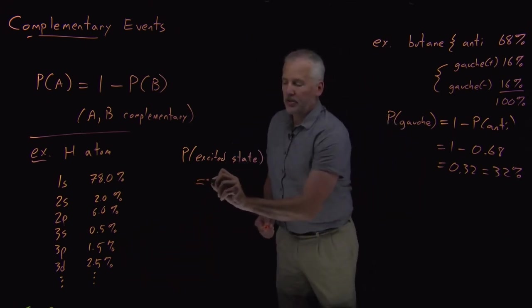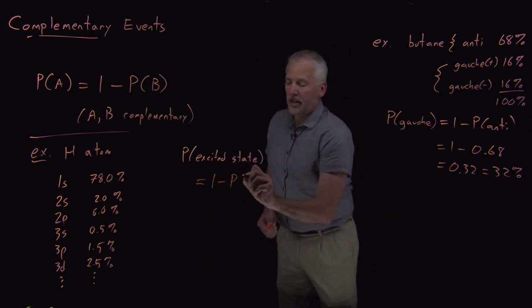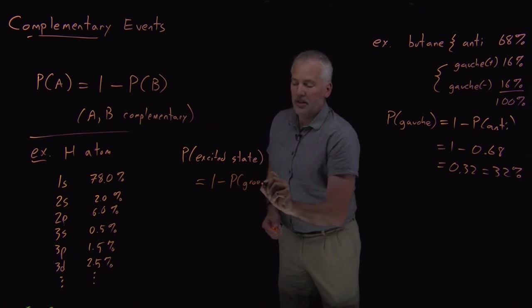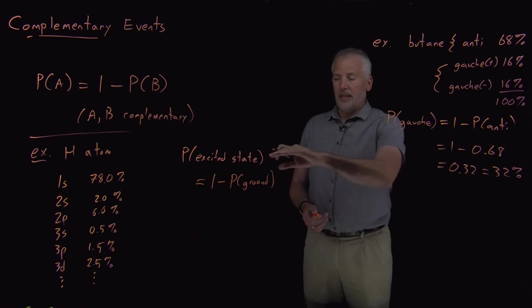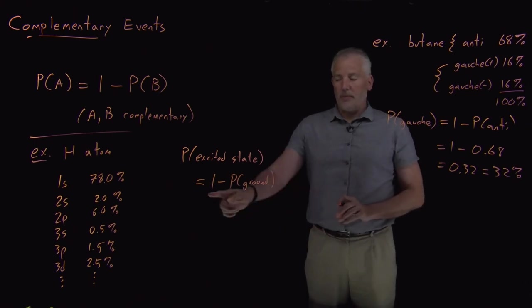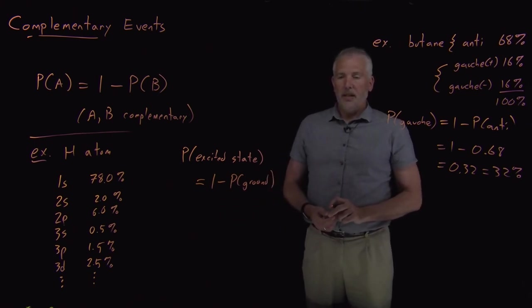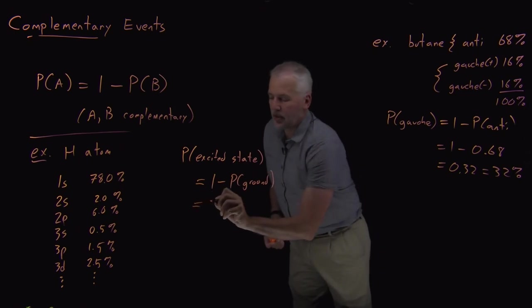But, of course, the easier way to answer that question is to say, well, that's either it's in a ground state, the 1 single ground state, or it's in one of the excited states. So the probability that it's in any one of the excited state is 1 minus the probability that it's in the ground state. And that we can do much more easily.